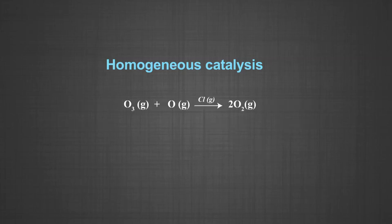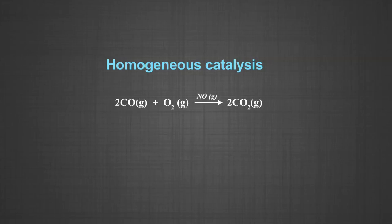Number four, the decomposition of ozone using atomic chlorine as catalyst. Ozone and chlorine are in the same gaseous phase. Number five, oxidation of carbon monoxide to carbon dioxide using nitric oxide as a catalyst. Carbon monoxide reacts with dioxygen to give carbon dioxide. Both the reactants and the catalyst are in the same gaseous phase.